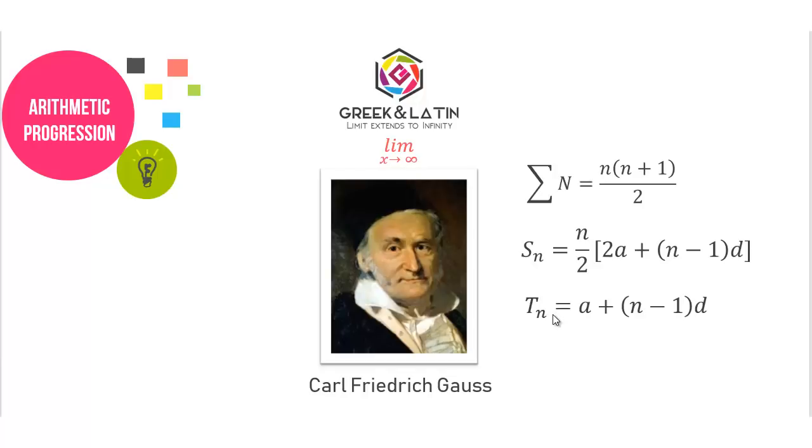This great man happened to be one of the most influential mathematicians to have ever graced our planet. He is Carl Friedrich Gauss, often referred to as the Prince of Mathematics, who has made innumerable contributions to various branches of math and science.